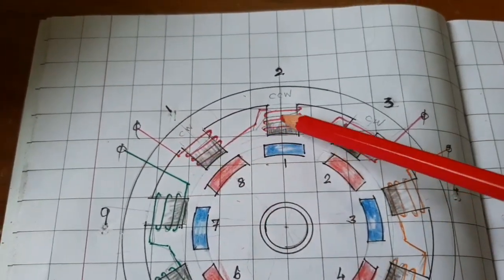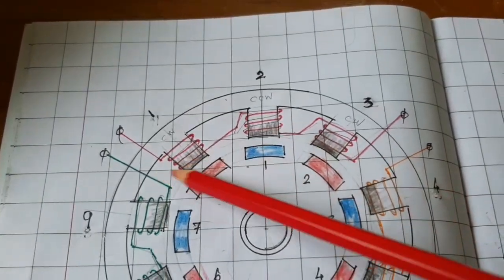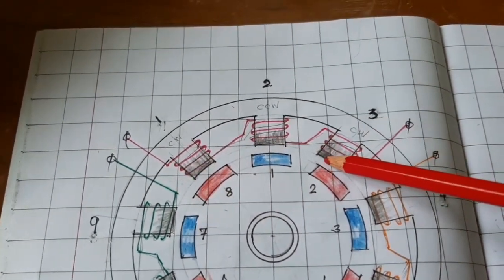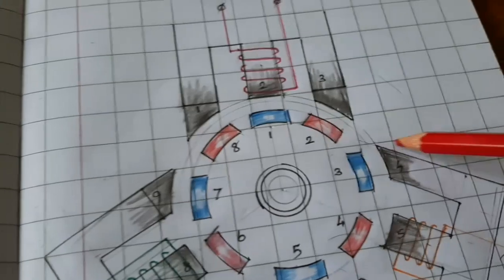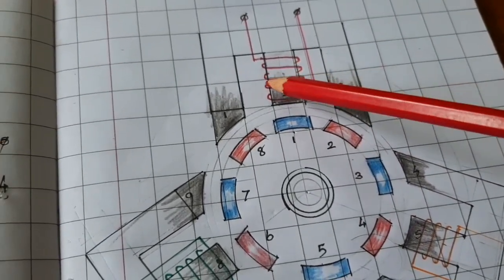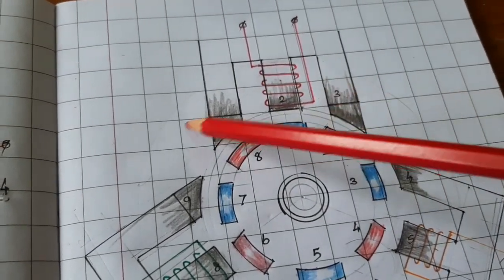The same principle is adapted here. When you give the supply, the middle portion is north pole and the other two parts are south pole. That's why I'm using three transformers instead of the stator.